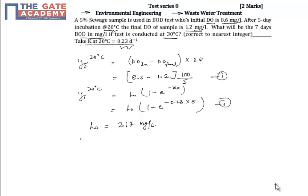The K value at any temperature T is given as K20 × 1.047^(T-20). From here we get K30 equals 0.23 × 1.047^(30-20), which equals 0.364 per day.